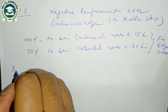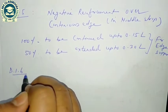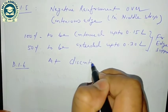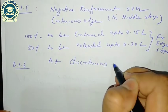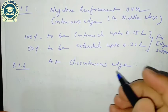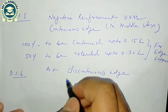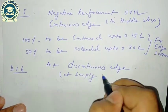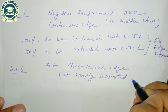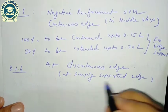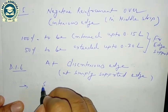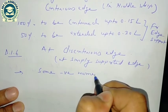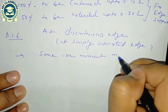Clause D.1.6 applies at a discontinuous edge or simply supported edge. At a simply supported edge, some negative moment may arise and must be accounted for in the detailing.